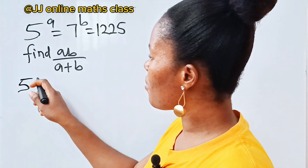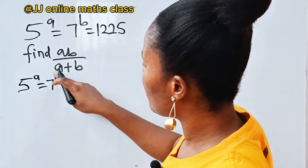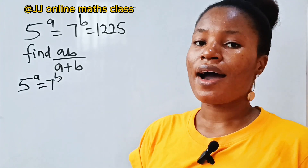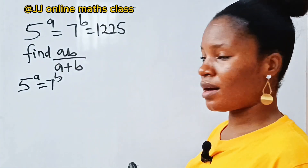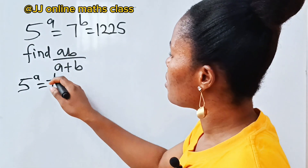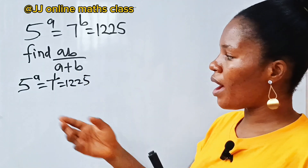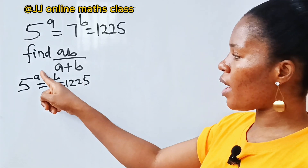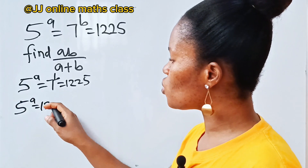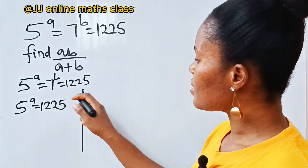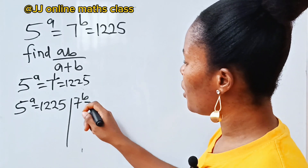First of all, let's rewrite the question: five to the power of a is equal to 1225, and seven to the power of b is equal to 1225. So we have two equations here: five to the power of a is equal to 1225, and seven to the power of b is equal to 1225.